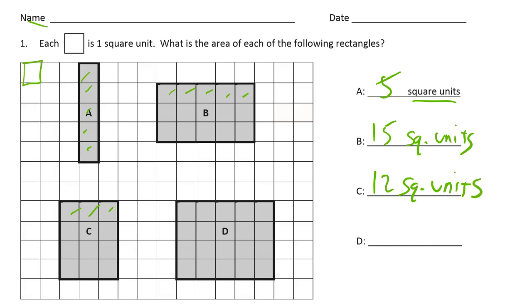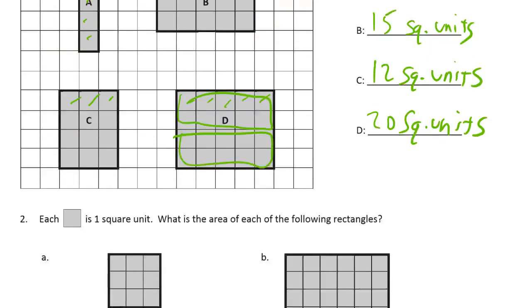D is one, two, three, four, five — four rows of five. That's a 10 frame. That's 20 — 20 square units.